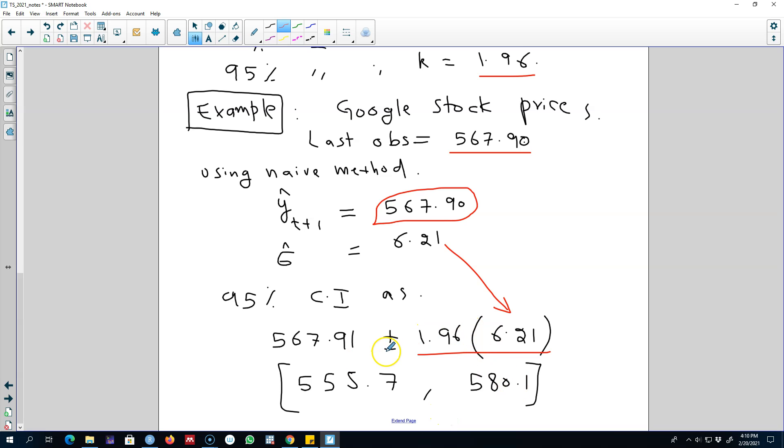So we can calculate two values for the Google stock price. One is by subtracting this part from our forecast and one is by adding this part. This will give us a range of values that Google stock price can take.